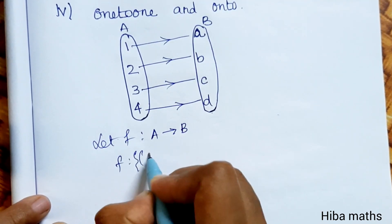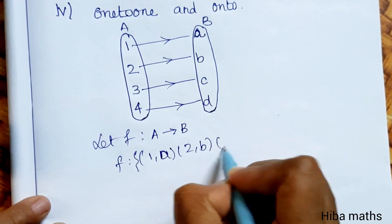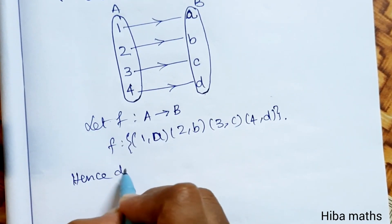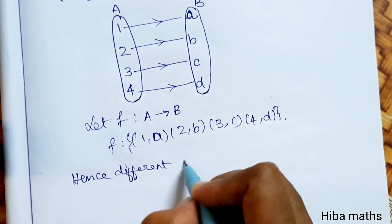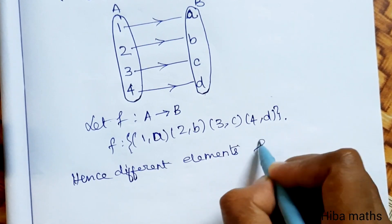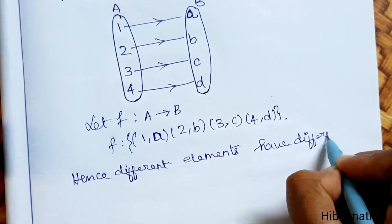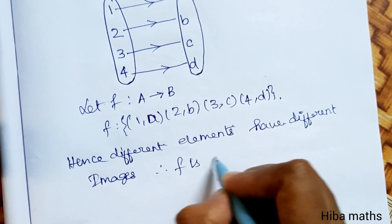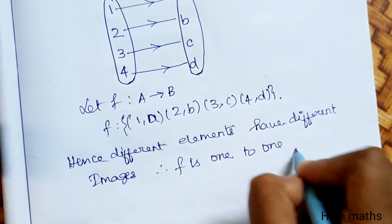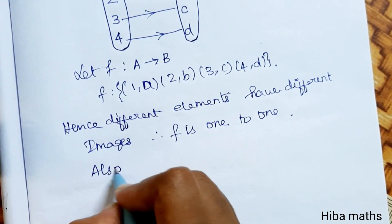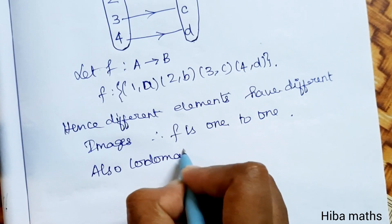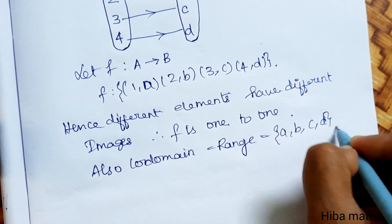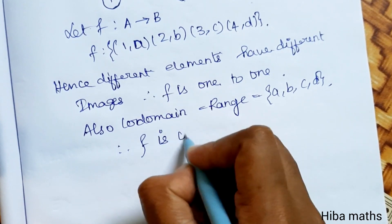For the fourth subdivision, let f = {(1,a), (2,b), (3,c), (4,d)}. Different elements have different images, therefore f is one-to-one. Also, the codomain equals the range, which is {a, b, c, d}, so f is onto.